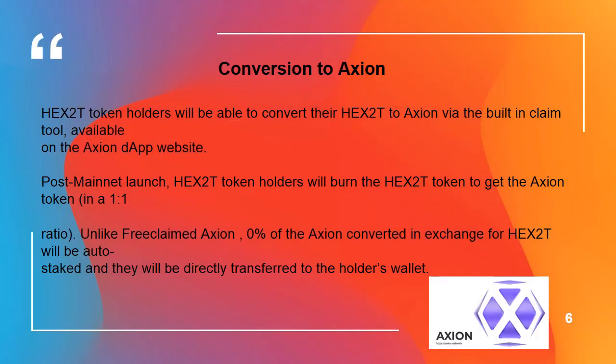Conversion to Axion. HEX 2T token holders will be able to convert their HEX 2T to Axion via the built-in claim tool, available on the Axion DApp website. Post mainnet launch, HEX 2T token holders will burn the HEX 2T token to get the Axion token in a 1-to-1 ratio. Unlike free claimed Axion, 0% of the Axion converted in exchange for HEX 2T will be auto-staked, and they will be directly transferred to the holder's wallet.